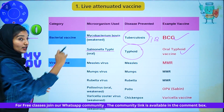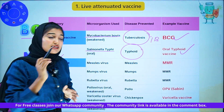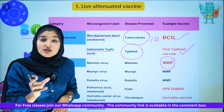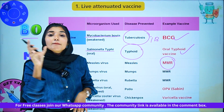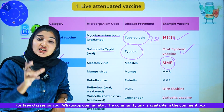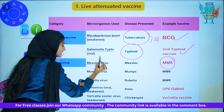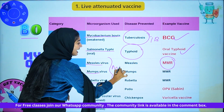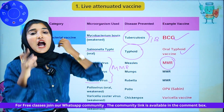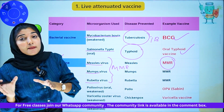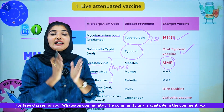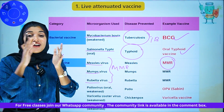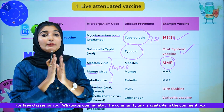Now for viral live attenuated vaccines — there are four types. First is MMR, which stands for Measles, Mumps, and Rubella vaccine. These three viruses — Measles, Mumps, and Rubella — correspond to the three diseases: Measles, Mumps, and Rubella disease. The vaccine is called MMR — it's a viral live attenuated vaccine.